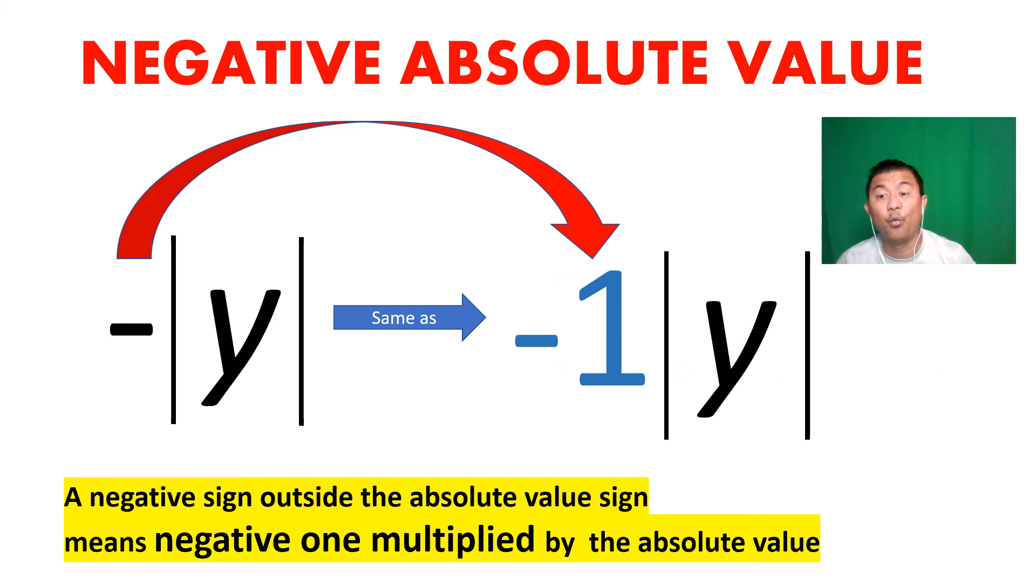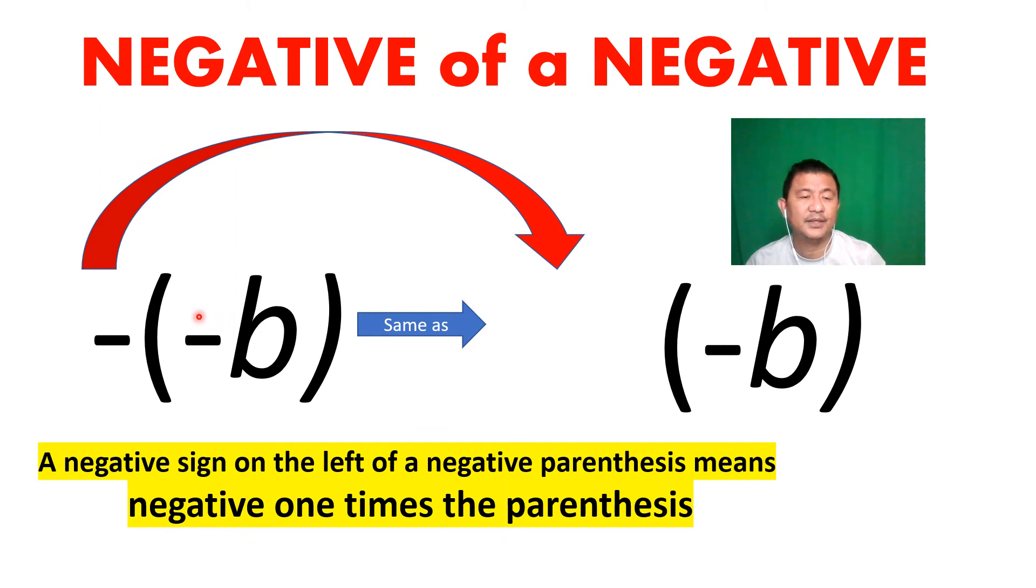A negative of a negative: how can it be double negatives? Because that negative outside again means what? Times a negative one.